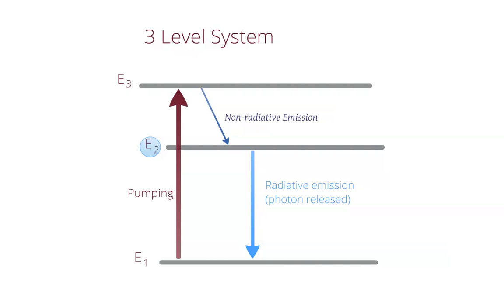Although lasing can occur in a three-level system and does in systems such as a Ruby laser, it isn't very efficient. Over half the atoms must be pumped from E1 to E3 to allow stimulated emission.